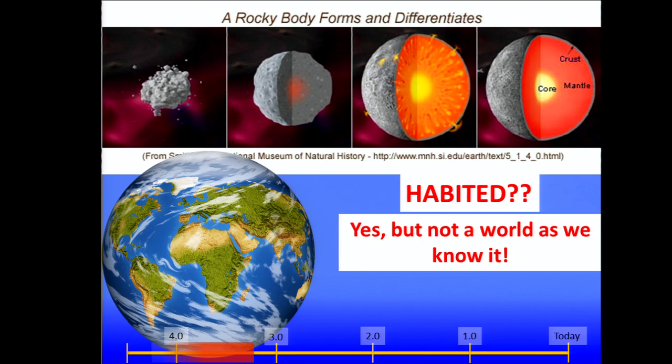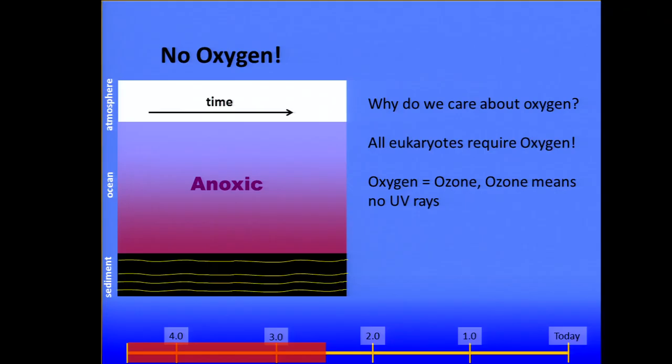This is true, we're habited very early on, but it's not a world as we would know it. Why is that? Well, primarily, for the first 2 billion years of Earth history, we have no oxygen on the planet. Why do we care about oxygen? Well, all eukaryotes, if we want to get to these much more complex cells, any modern eukaryote requires oxygen. But more importantly than that, without oxygen, we have no ozone. And ozone, as most of you will probably remember from the 80s and 90s, the ozone layer traps all of the ultraviolet radiation from the sun. So it's very hard for people who work on early life on Earth to understand how life survived when UV radiation likely had to be bombarding the surface of the planet. There's no ozone there to trap it at all.